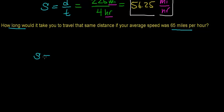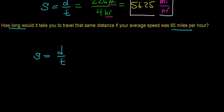We start with the same relationship: speed equals distance divided by time. We're assuming constant speed — equal distances in equal periods of time. Now we know the speed and the distance, so we're solving for time. To do that, we multiply both sides of the equation by time to isolate the time parameter. What you do to one side of an equation, you do to the other.